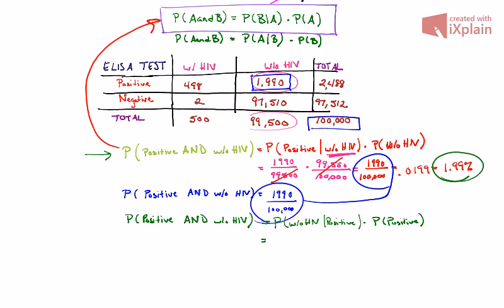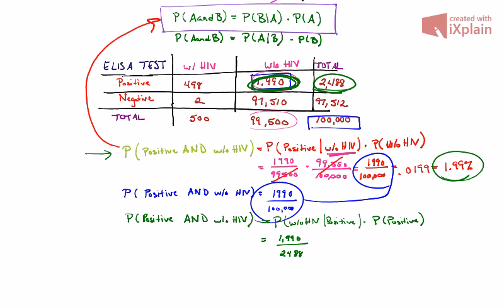The probability of being without HIV given that you test positive. Well, those who test positive, our pool then is going to be 2,488 individuals. And within that pool of 2,488 individuals, 1,990 people are without HIV. And then we want to know the probability of someone testing positive.